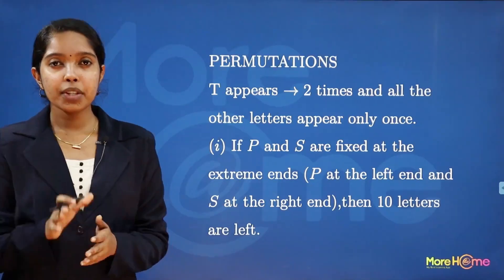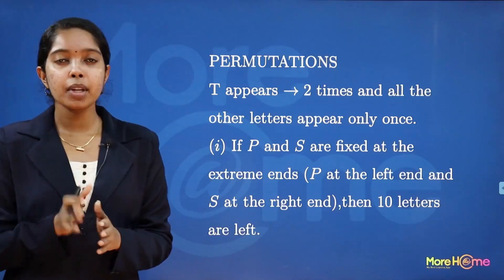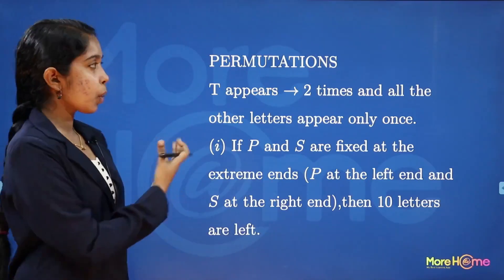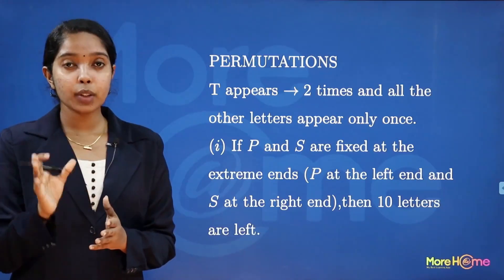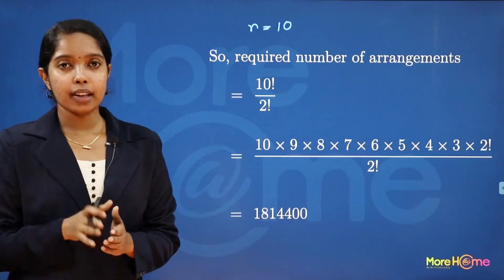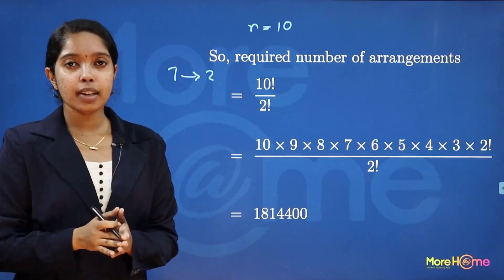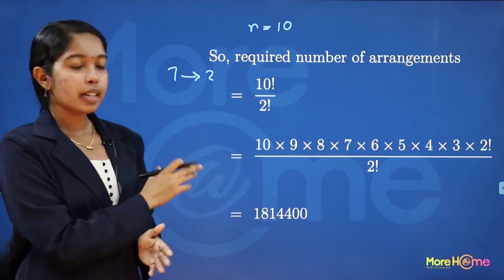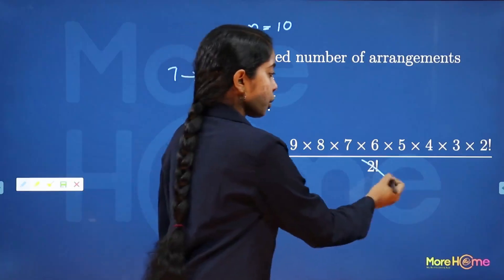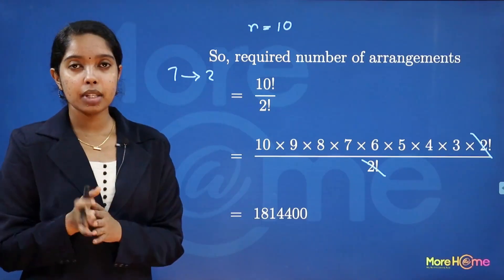Case 1: P and S are fixed at the extreme ends. With P and S fixed at the two ends, the remaining 10 letters must be arranged in 10 places. Since T appears two times, the required number of arrangements is 10 factorial divided by 2 factorial. The two factorials cancel giving the total number of arrangements.